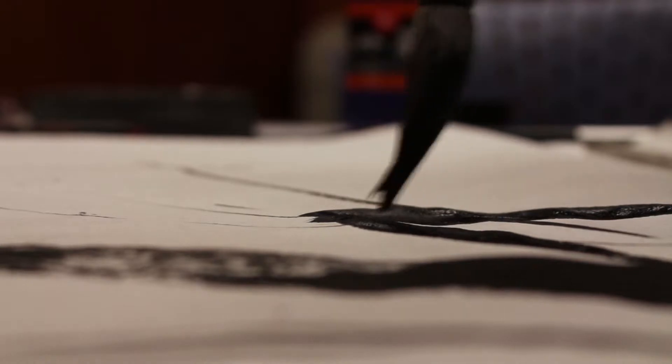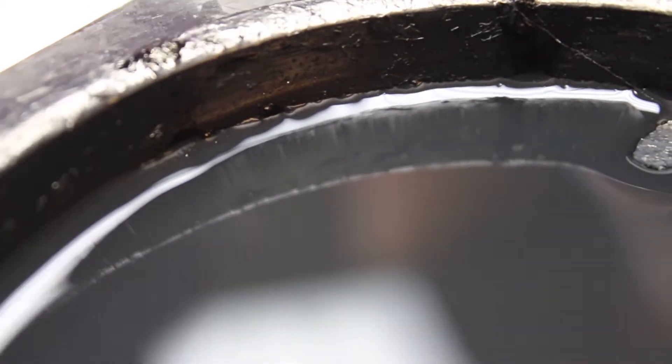The whole process of calligraphy essentially starts with an inkstone, the yantai, and the ink stick. So what we do is we just put water in the yantai, and this has an abrasive surface.